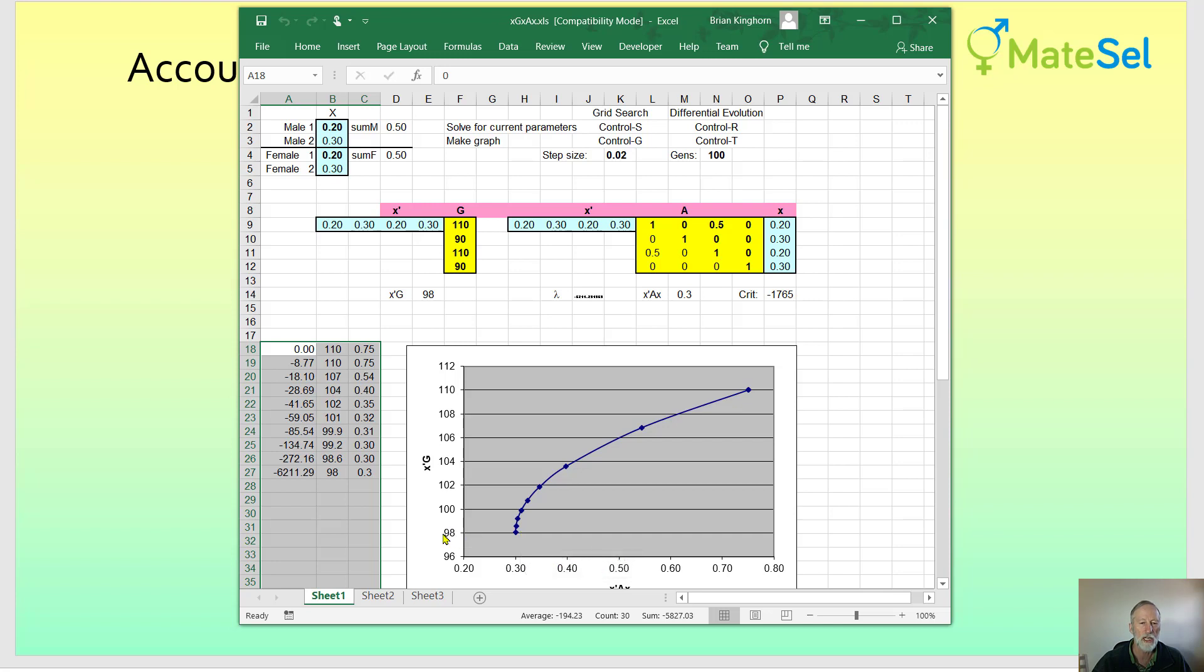And there's a little bit of a change in genetic merit as well because we are going to be using more of the less meritorious male and female because our emphasis at this point on the frontier is to go for minimum co-ancestry. In all cases when you're only interested in genetic merit the best outcome is 110 units with the first male and first female.